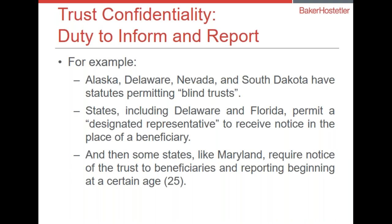In terms of fiduciary liability, unless there's something in the agreement that alleviates your duty to provide information to beneficiaries, one of the worst situations is when trust assets have eroded, the beneficiaries received no communication from the trustee, and there's nothing in the trust instrument saying you didn't need to do that. The trustee has very little argument there and a lot of liability. From a purely trustee point of view, you may want to be in a state that has a notice or reporting paradigm consistent with the way the trust will actually be administered.